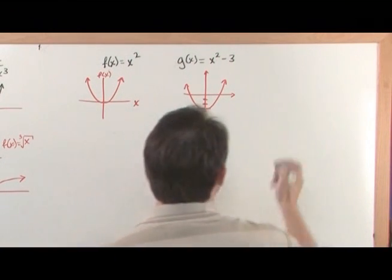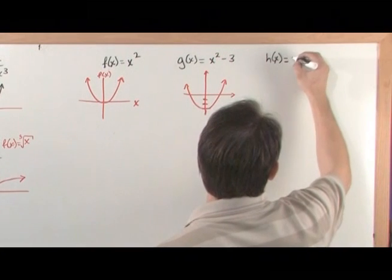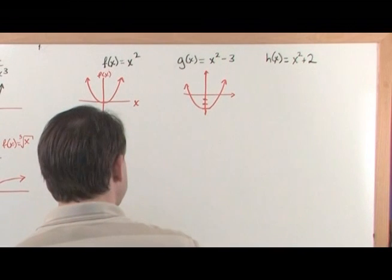Now, what if we had h of x is equal to x squared plus two, like this, what would that look like?